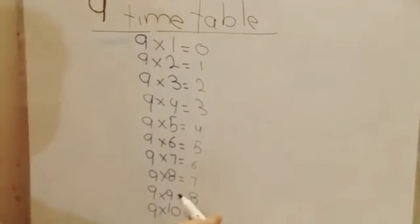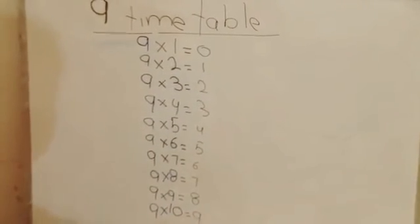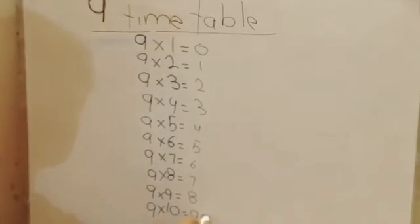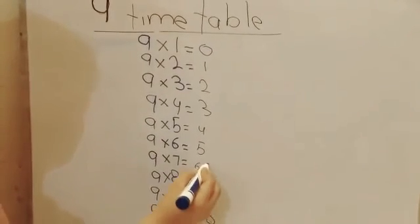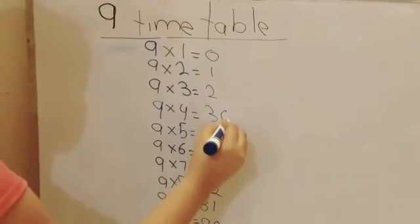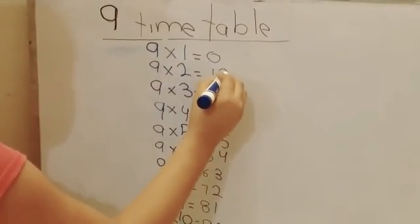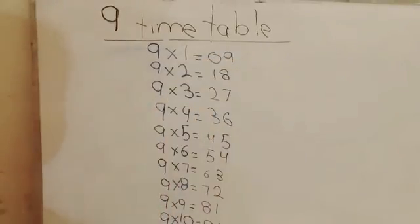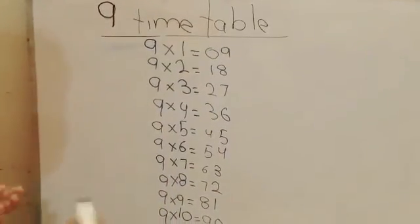And now you have to write counting from 0 to 9 from the descending order: 9, 8, 7, 6, 5, 4, 3, 2, 1, 0. See, we are having the whole 9 times table.